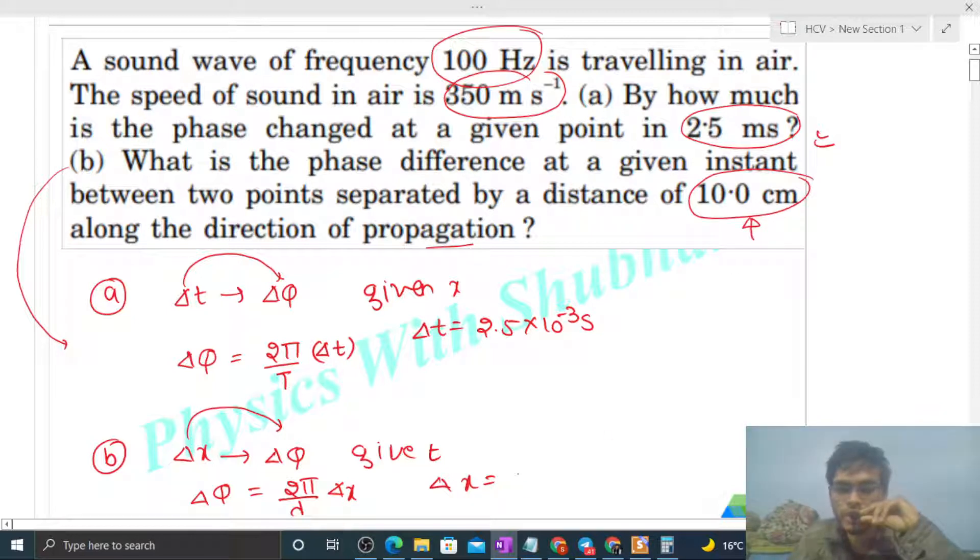Here we have to find out time period. Time period will be 1 upon frequency, so 1 upon frequency is 100. And here we have to find out wavelength, so wavelength will be simply speed divided by frequency.